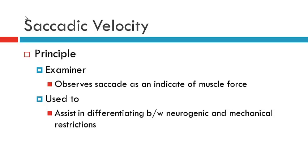We utilize saccadic velocity when we observe that there is an underaction of an extraocular muscle. So if, for instance, you had a patient who had a left abduction limitation, you could use saccadic velocity to assist in working out if this is neurogenic in nature or mechanical. As mentioned in our previous videos on ocular movements, we can use ductions to assist in differentiating between neurogenic and mechanical restrictions.